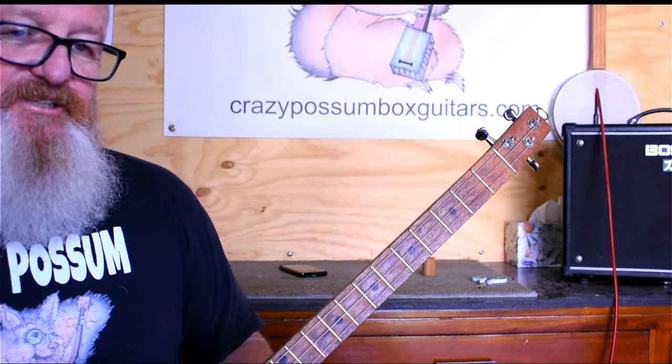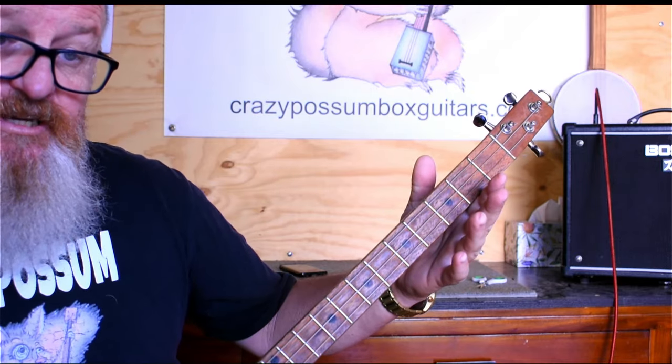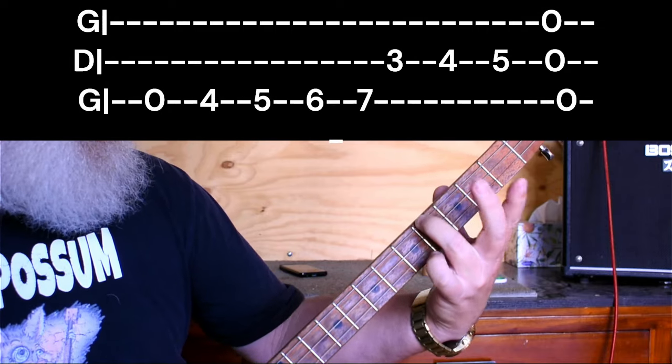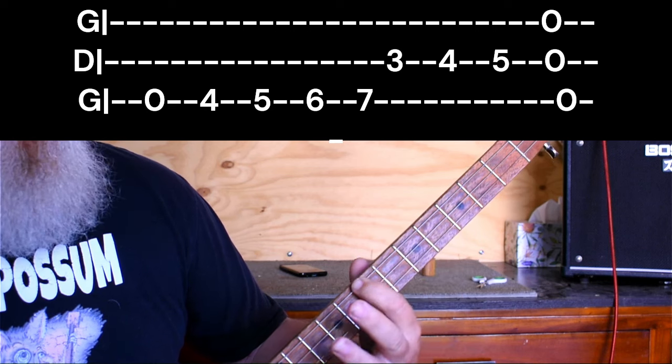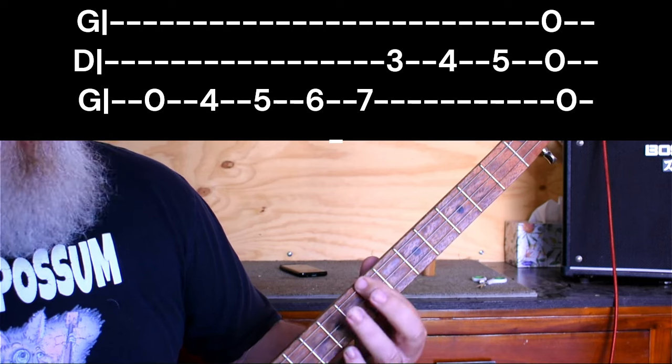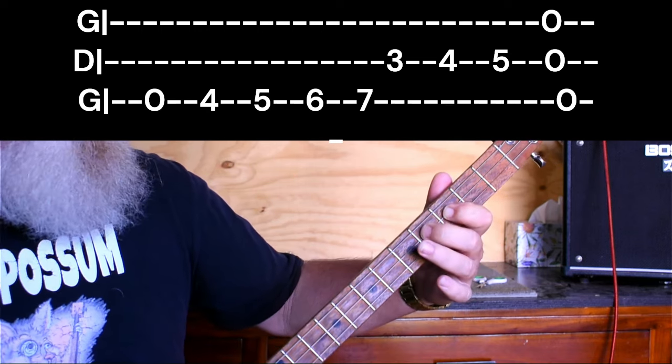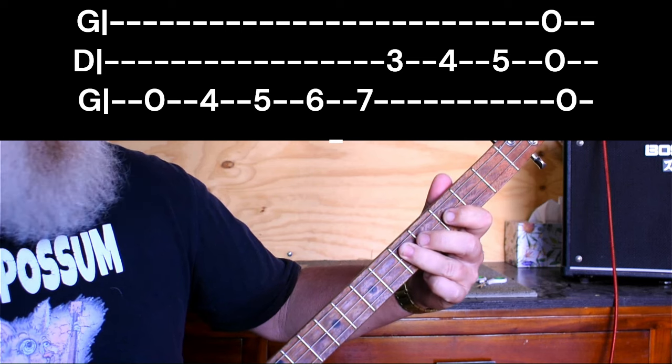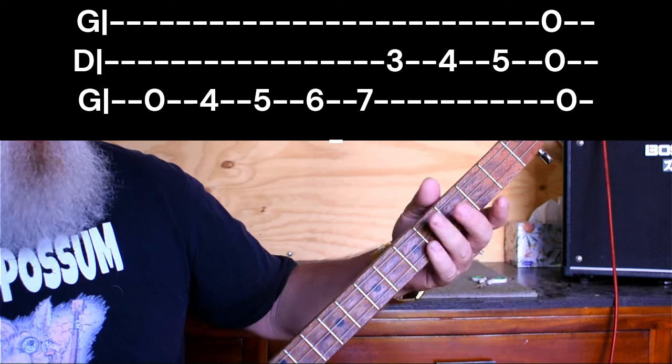Now here's our big finish. We're going to go open G. And then we're going to hit on the top string, hit the fourth, fifth, sixth, seventh. Just like that. And then we're going to go to the third on the middle string, fourth on the middle string, the fifth on the middle string. And then open G. Just put that all together.